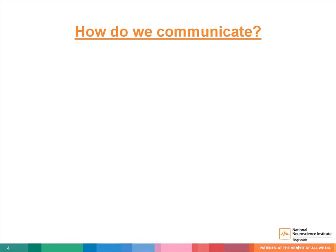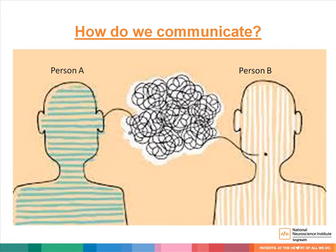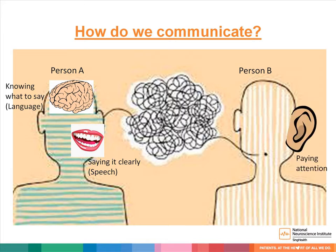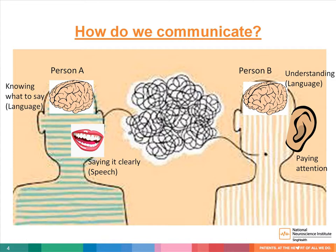Let's first look at how communication occurs in a simplified diagram. Say person A wants to tell person B about a new movie he saw yesterday. A first has to think about what he wants to say, find the right words, and string them into a sentence. A then produces the speech sounds using his mouth. Person B needs to be attending to the conversation, and then B's brain processes the information heard and understands the meaning. When breakdown occurs in one or more of these areas, we might have difficulty expressing ourselves or understanding what other people mean.